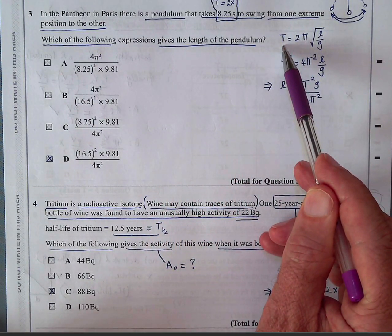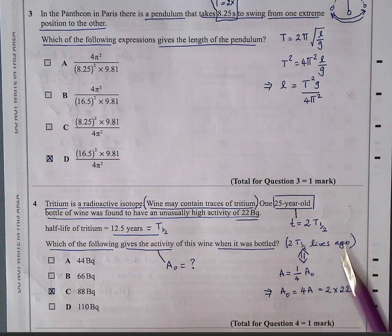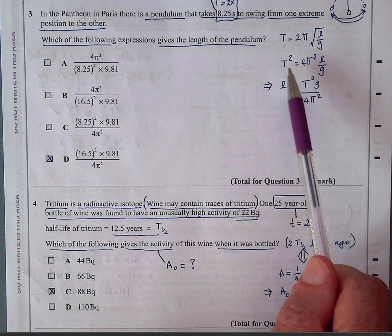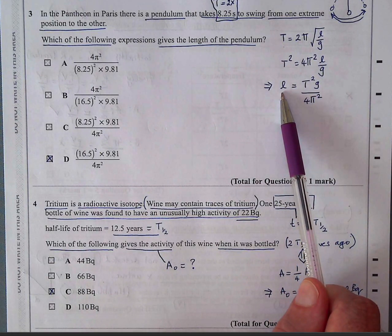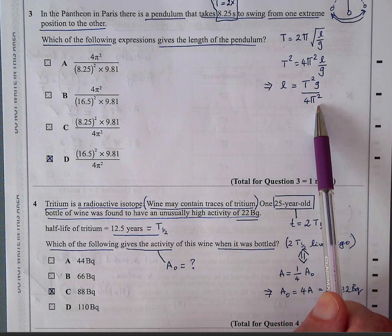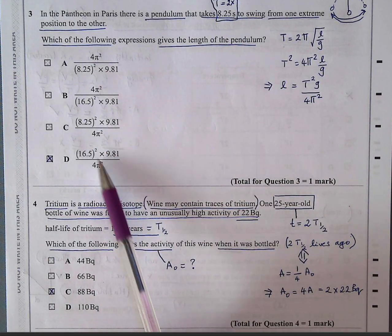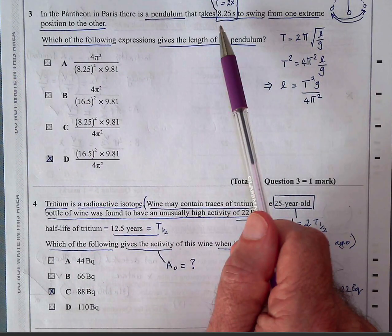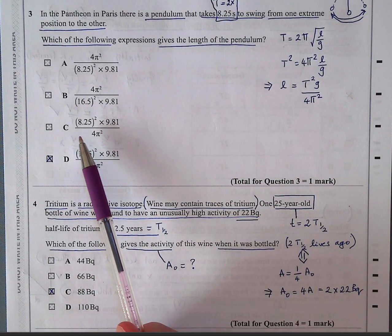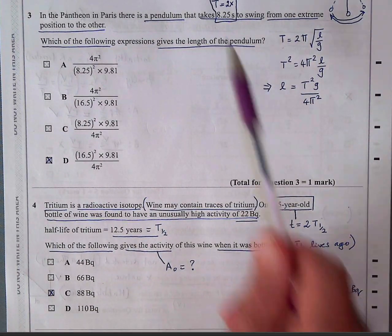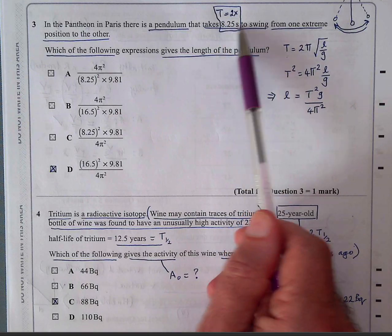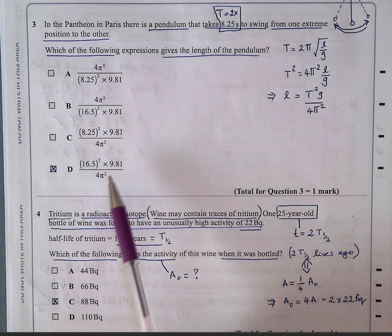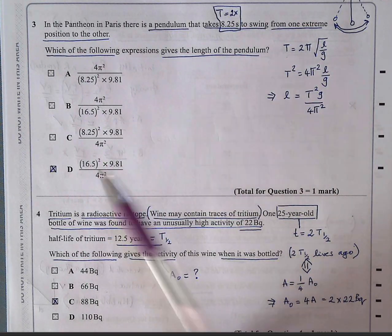Which of the following expressions gives the length of the pendulum? Well, it's algebra. The equation given to you on the equation sheet is t equals 2 pi root L over G. So if you rearrange that so you can get L away from the square root sign, t squared is 4 pi squared L over G. Make L the subject of the equation. Then it will be t squared G over 4 pi squared. So you're looking for something with 4 pi squared at the bottom. So it has to be C or D. T squared, well, t squared is not 8.25. So they want you to think that the period is 8.25. So many students make this error.